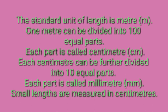The standard unit of length is the meter. One meter can be divided into one hundred equal parts — each part is called a centimeter. Each centimeter can be further divided into ten equal parts — each part is called a millimeter. Small lengths are measured in centimeters. These are standard units, so whether you take the measurement in Japan or in India, it will be the same, because there is standardization. The standard units are meter, centimeter, and millimeter.